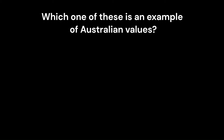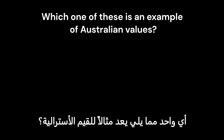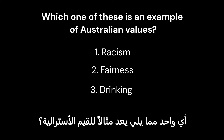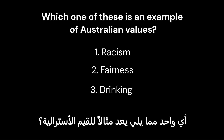Which one of these is an example of Australian values? 1. Racism. 2. Fairness. 3. Drinking. Exactly, that is right. 2. Fairness.